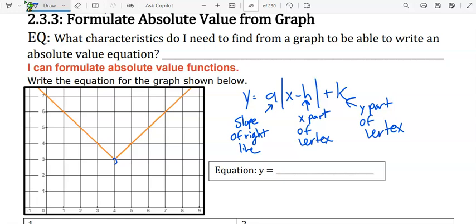and then the k is the y part of the vertex. So let's find those values. This is a vertex. It's at 4, 3.